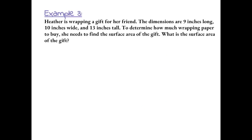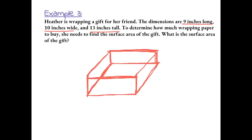Example 3: Heather is wrapping a gift for her friend. The dimensions are 9 inches long, 10 inches wide, and 13 inches tall. To determine how much wrapping paper to buy, she needs to find the surface area of the gift. Let's draw a gift box. The piece in the back is 13 by 10, so 13 times 10 gives us 130, and the front piece is also 130.